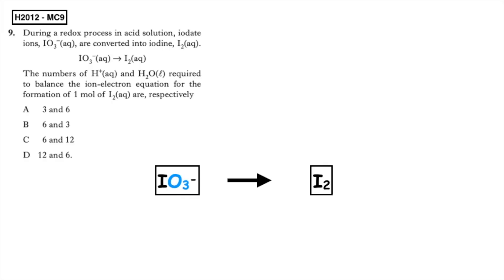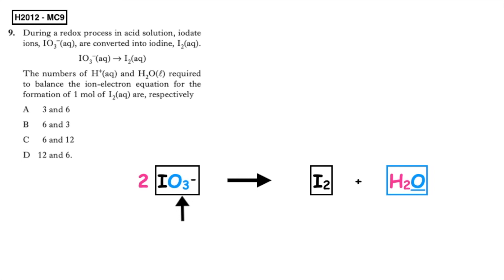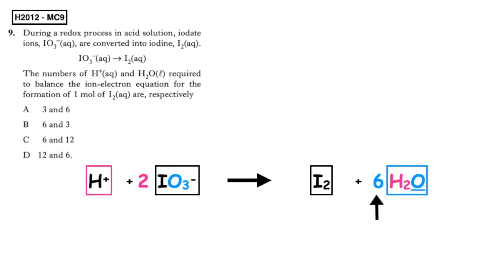This past paper question is from the Higher 2012 multiple choice question 9. During a redox process in acid solution, iodate ions IO3⁻ are converted into iodine I2. Firstly, balance all elements not oxygen or hydrogen: on the left we've got one iodine, on the right two, so we put a big two in front of the iodate. We've got oxygens on the left, so we add water to the right. Three inside the box multiplied by two outside gives six oxygens, so we need six water molecules. We've introduced hydrogen, so we add hydrogen ions to the left: two inside the box times six gives 12, so we need 12 hydrogen ions.